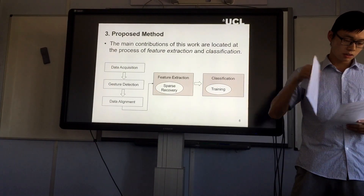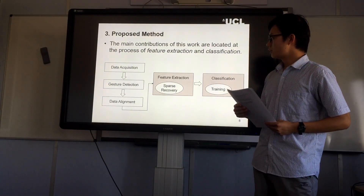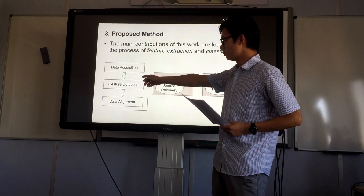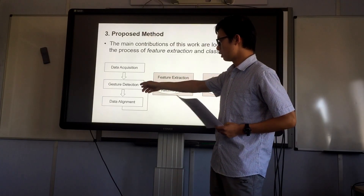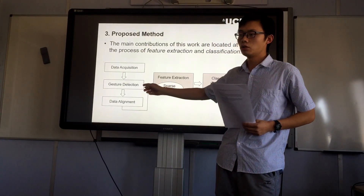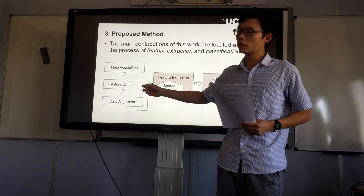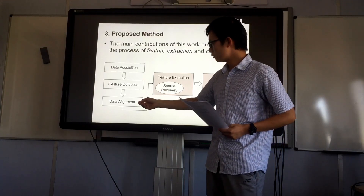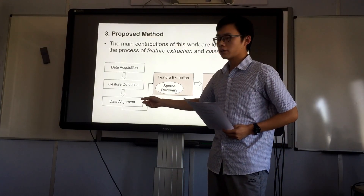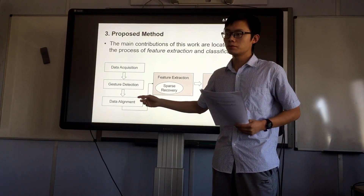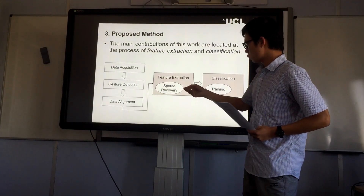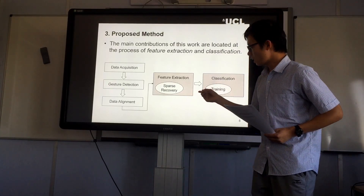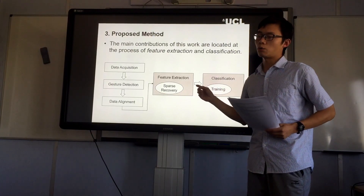Here is the flowchart of our gesture recognition system. First, the data were collected by radar. Then the signal segments corresponding to a gesture are detected and located by signal processing techniques such as energy thresholding. Then the data is aligned to synchronize the time information. Now we come to the most important steps: feature extraction and classification. These two steps are the main contribution of our work.